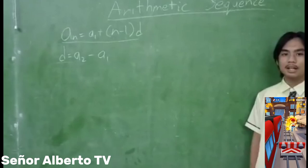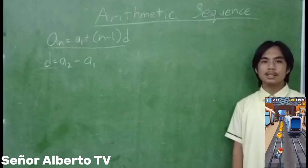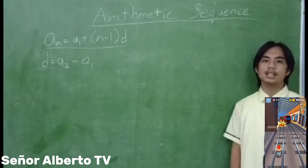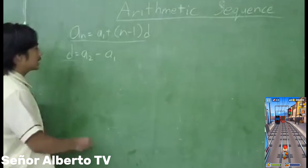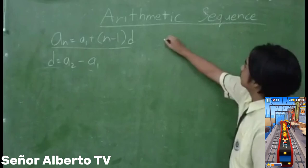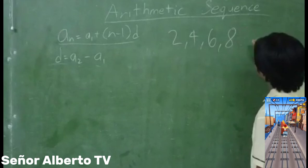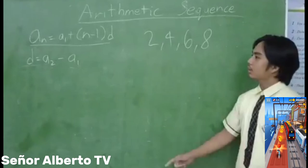So what is Arithmetic Sequence? Arithmetic Sequence is a sequence in which each term is formed by adding a fixed number to find the specific term. So what do we mean by fixed number? A fixed number, or what we will call the difference, is found by subtracting the second term minus the first term.